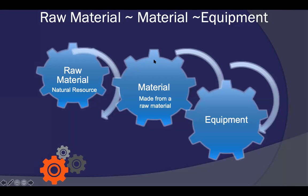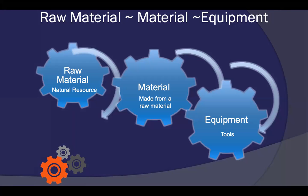So to summarize: raw material is a natural resource; material is made from a raw material; and equipment — for example, tools — is the stuff you're going to use to actually manufacture the product.